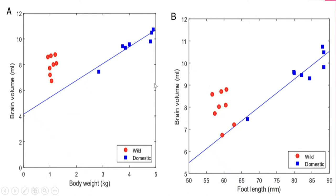This chart shows the results they got by comparing brain size with body size. As you can see, domestic rabbits are about four times larger than wild rabbits — each dot represents a rabbit they scanned. But proportionally, relative to body size, there's not a huge change in brain size, which is pretty interesting because it essentially went against their hypothesis.